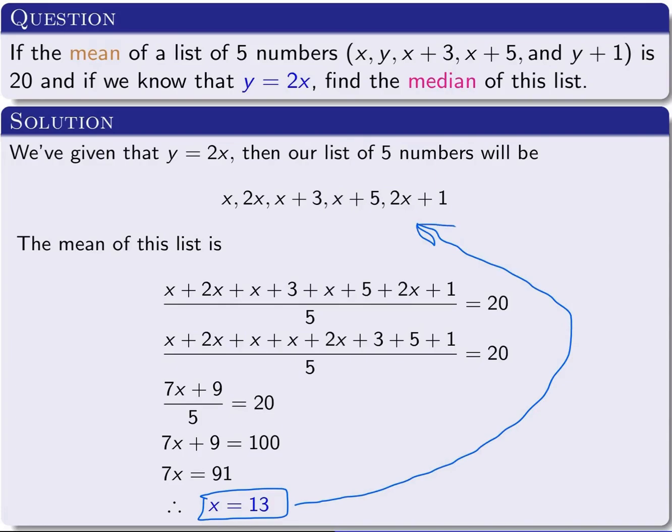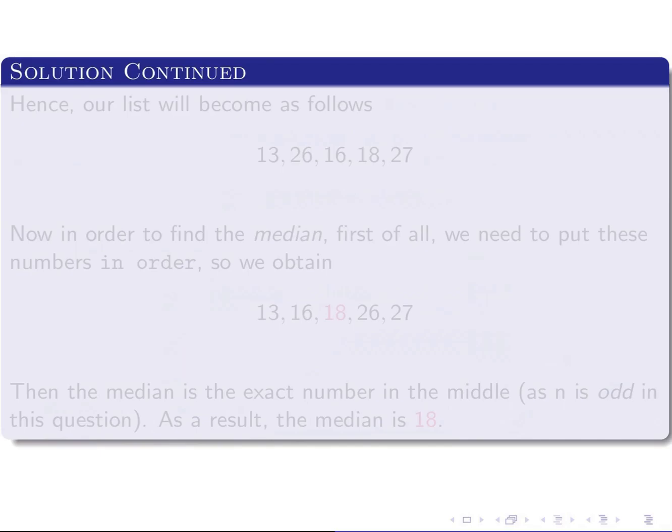these five numbers. The first one will become 13, the second one 26, then 16, then 18, and the last one is 27. So we have these five numbers: 13, 26, 16, 18, 27.